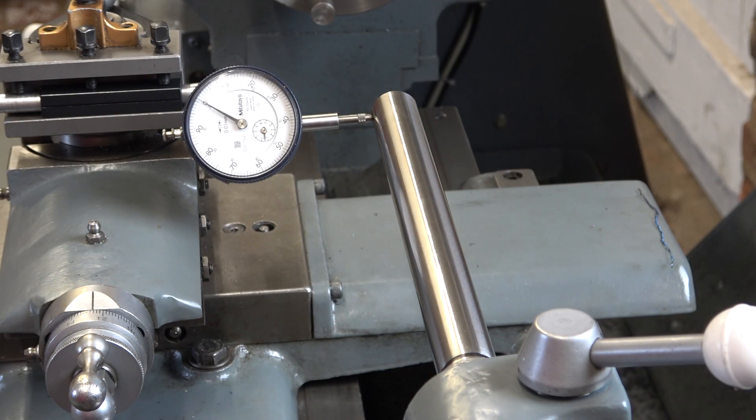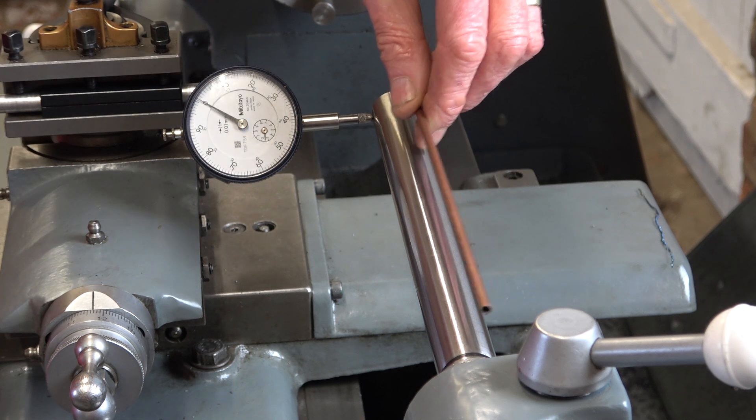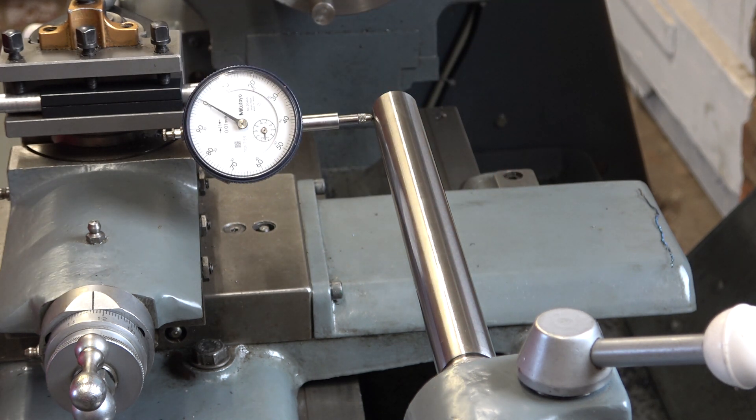This was another test suggested to me with the Morse taper of the test bar in the tailstock here, setting up the dial on the tool post and just checking what the deviation is whether the test bar is straight that way or that way. So here goes.